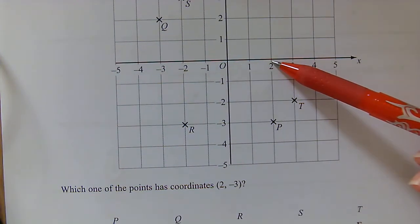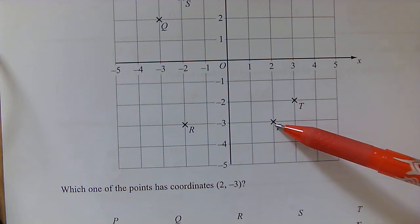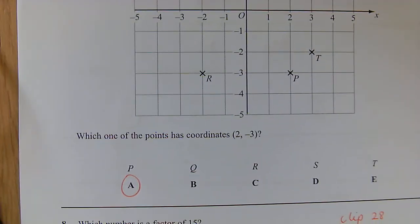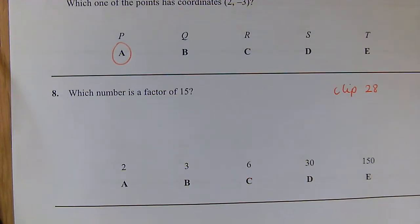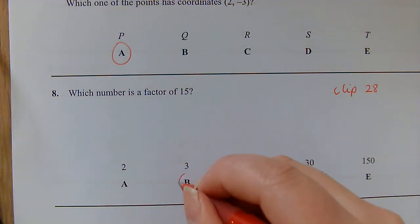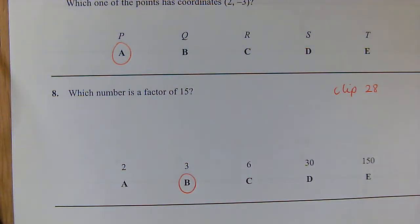Question 8: Which number is a factor of 15? So here we're looking at our pairs that will multiply to make 15. So we've got 1 multiplied by 15 and 3 multiplied by 5, so it's going to be 3 which is the factor.